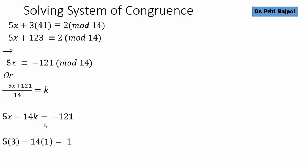We do not need k value. Initial solution we get 5 into 3 minus 14 into 1 gives us 1 because 5 and 14 they are relatively prime. We can find integers x and y such that we write it as a linear combination of the GCD.